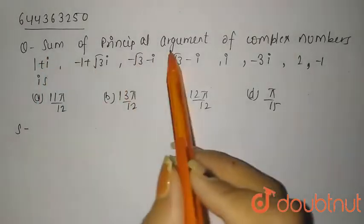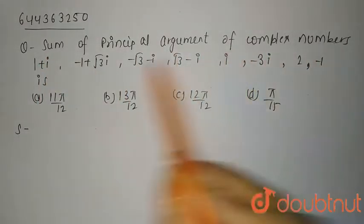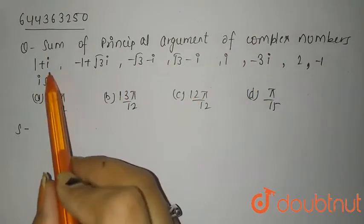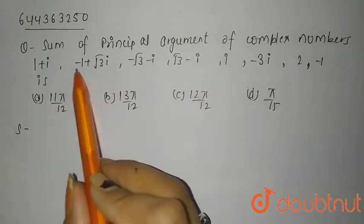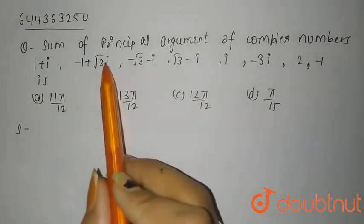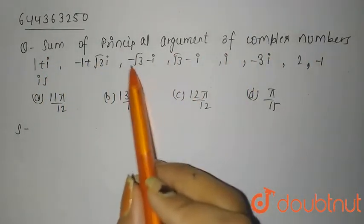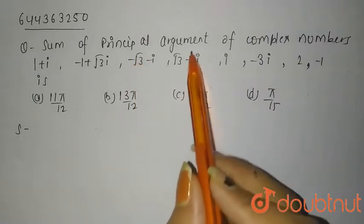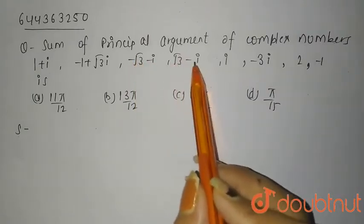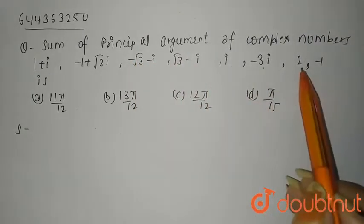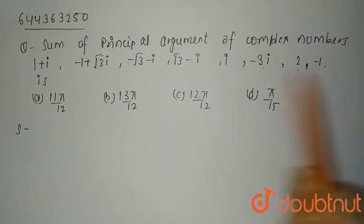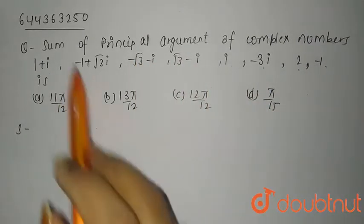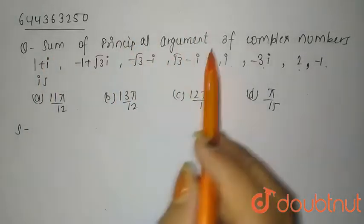The question is: find the sum of the principal arguments of the complex numbers: i, (iota minus one plus three root three iota), (root three minus iota), (minus root three minus iota), (iota minus three iota), and (2 minus 1). We need to find the sum of the principal arguments.